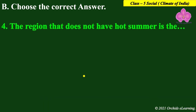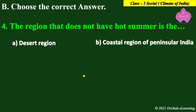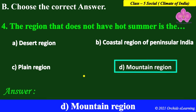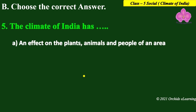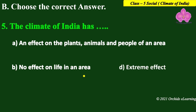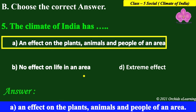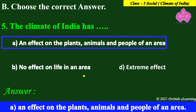Next: the region that does not have hot summer is — desert region, coastal region of peninsular India, plain region, or mountain region? The answer is D — mountain region, as mountain regions usually have cold summers. The climate of India has an effect on the plants, animals, and people of an area — the answer is A.